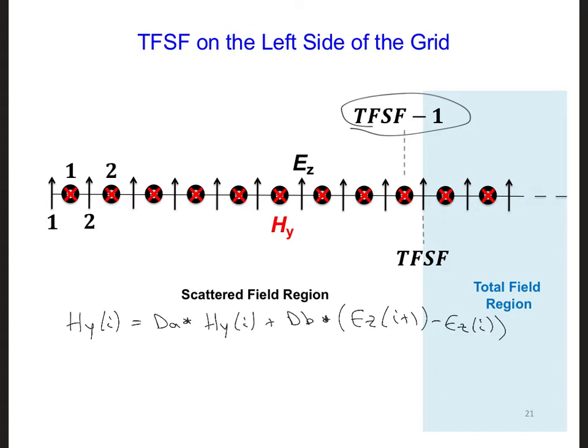And in this update equation, all the fields are scattered fields except for this one. This is a total field.